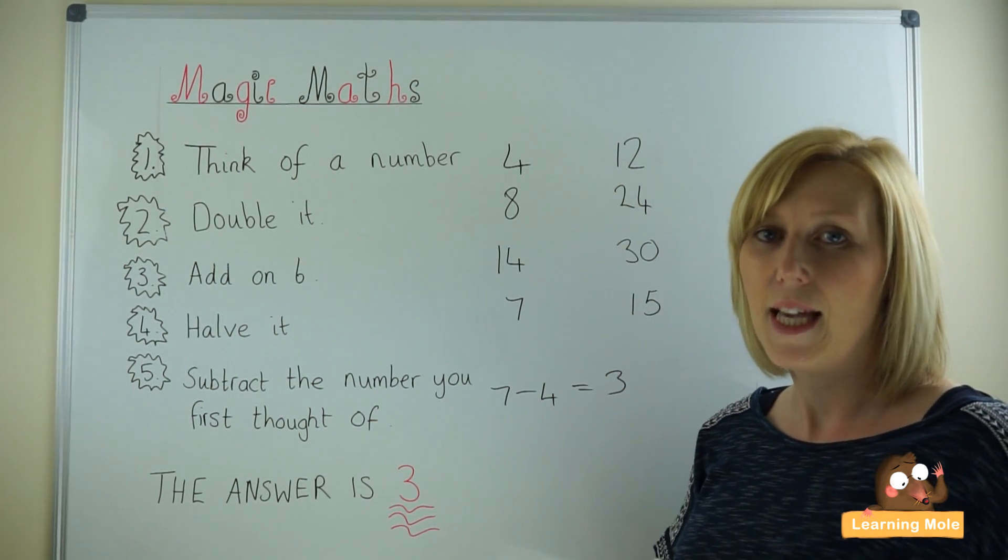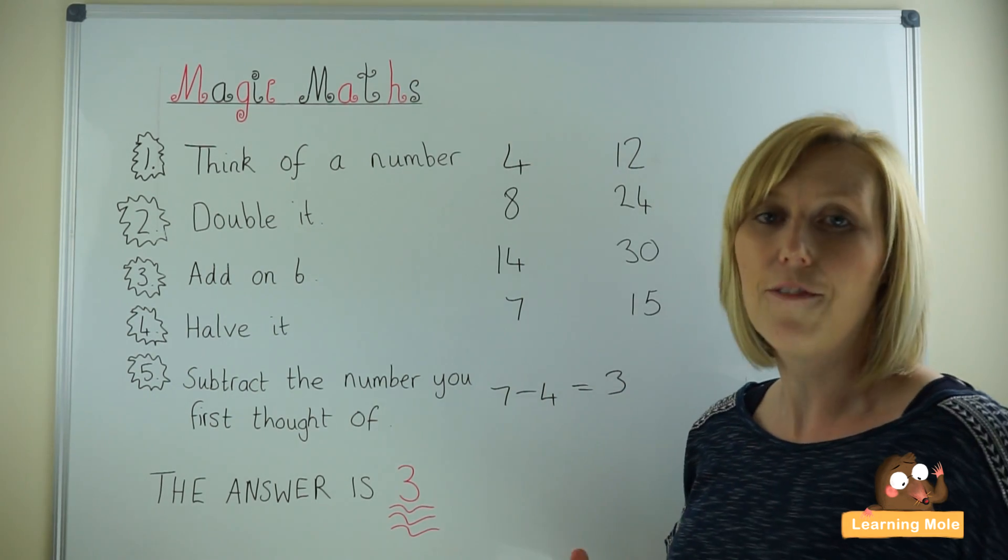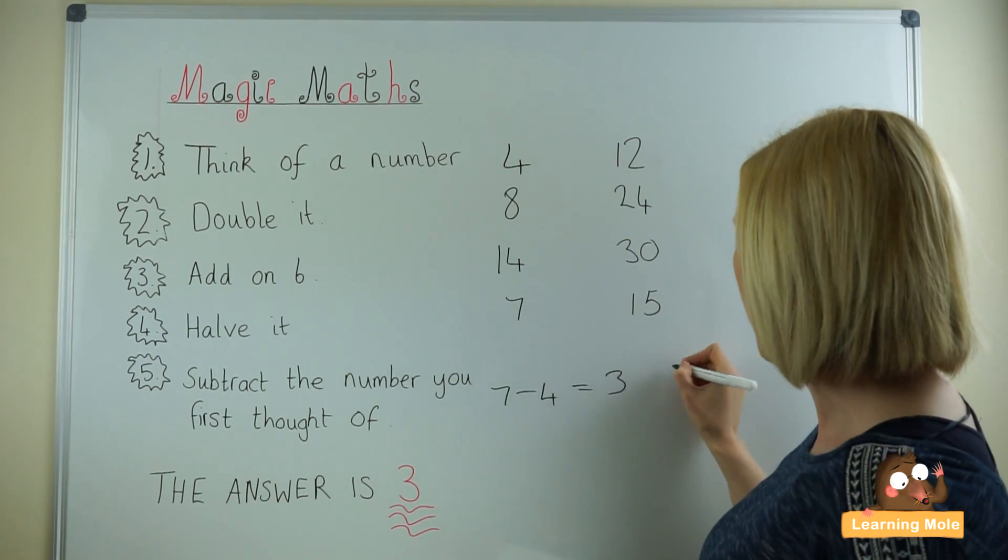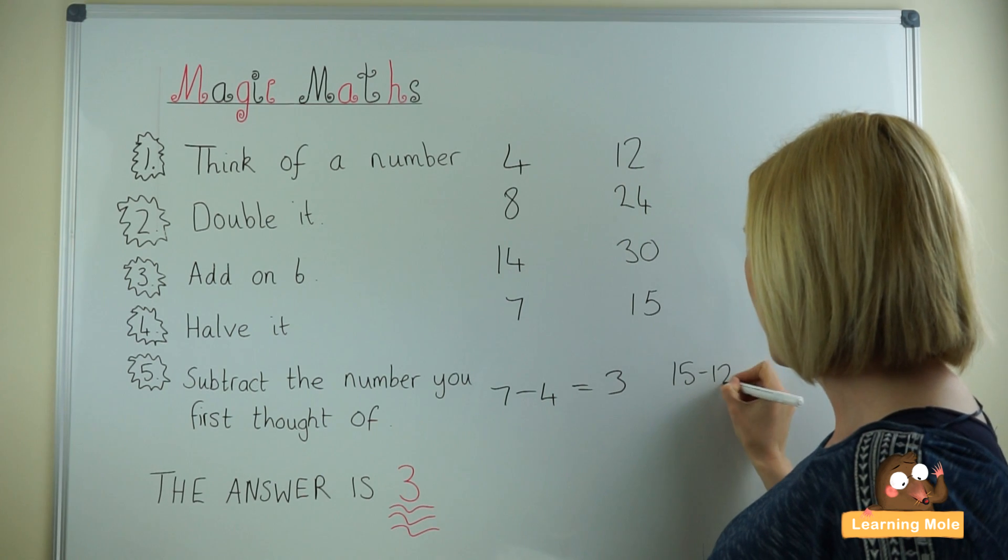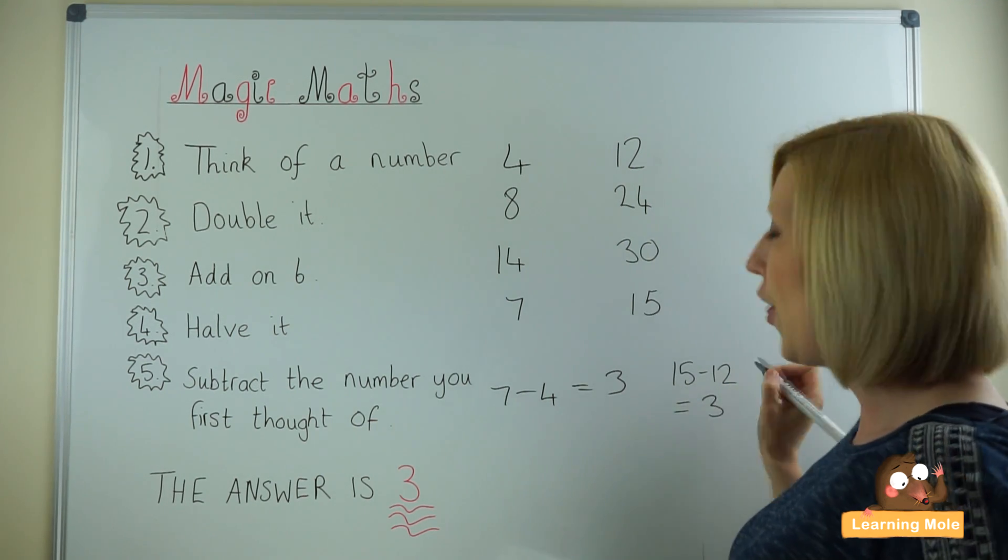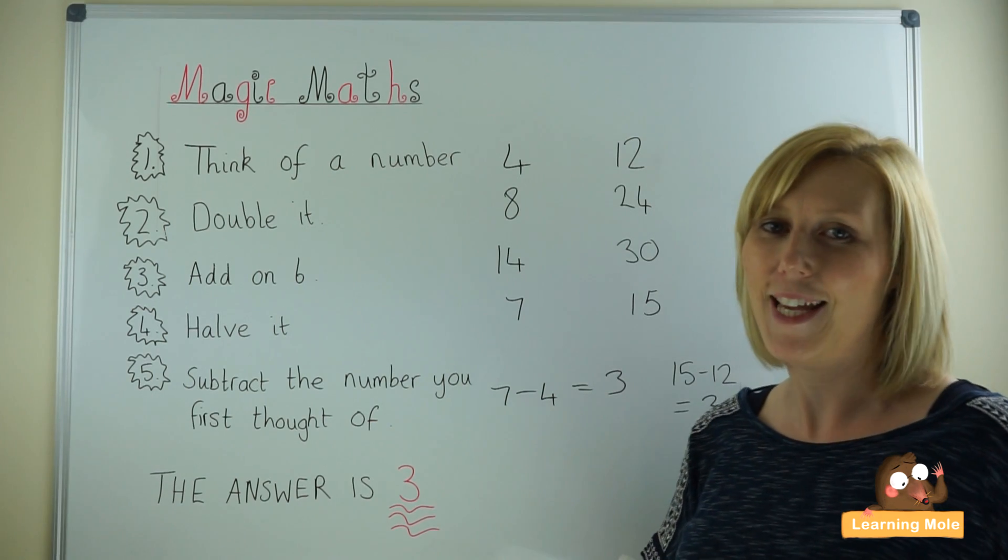And then our last step again is taking and subtracting that first number. So our first number was 12. 15 take away 12 which equals 3. So hey presto we get to 3 again.